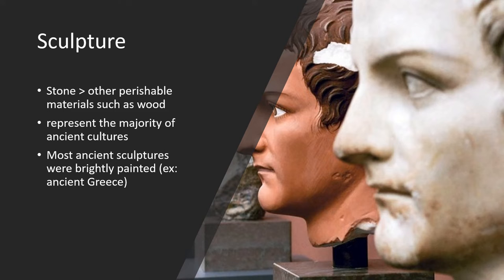Most ancient sculptures were brightly painted, and their colors have only faded over time. A good example would be the ancient sculpture and architecture of ancient Greece, which were actually brightly and elaborately painted. The only reason it appears white is because of burial conditions, aging, and overzealous cleaning.